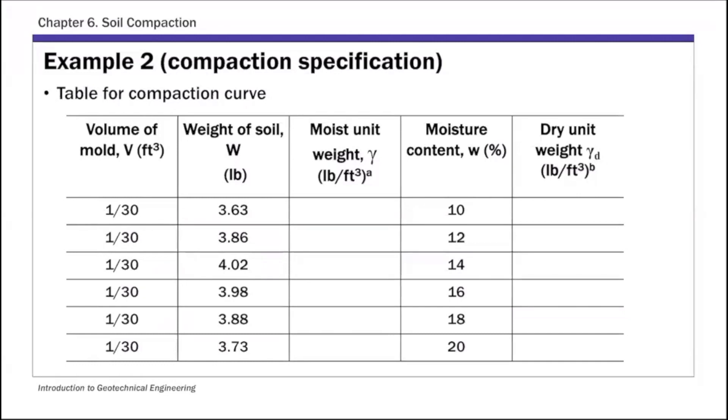We have capital V, that's the total volume of the soil, which is also volume of the mold, one over 30 square foot. And then we have the total weight of soil, so this is the moist, this is basically total weight. And then we are also given moisture content, that's this small w here, moisture content.